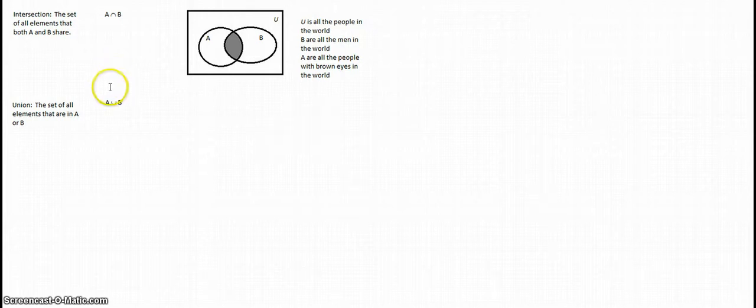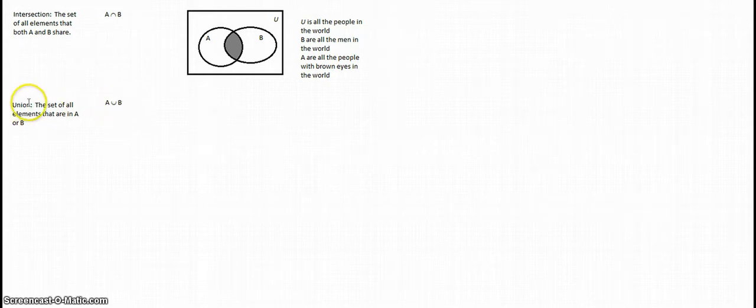The next word on our sheet is union. This is where it's going to be the set of all elements that are in A or B — a combination of both of those. The way we're going to write it is A and then U, B. A great way to remember that it's union is that it's a right-side-up U.